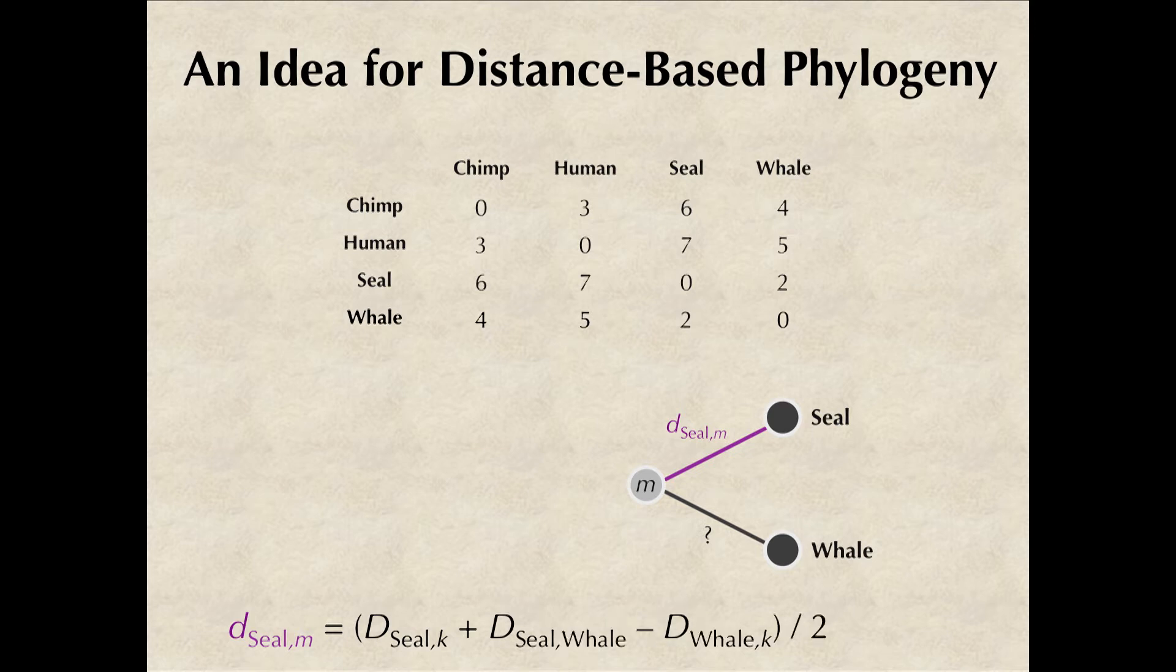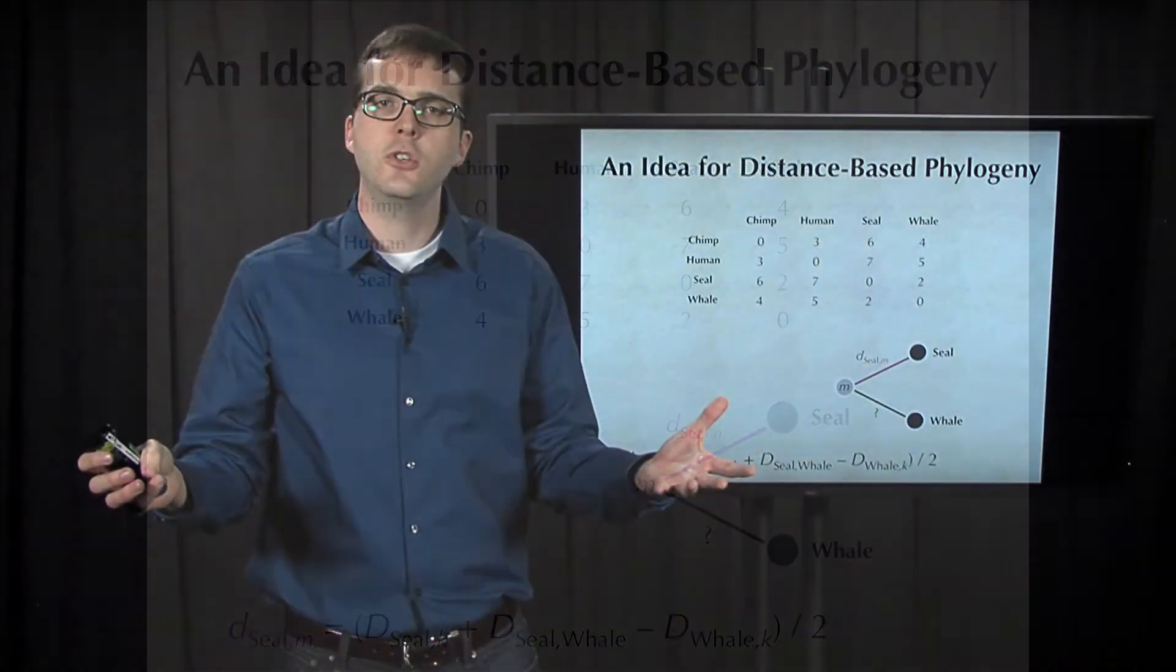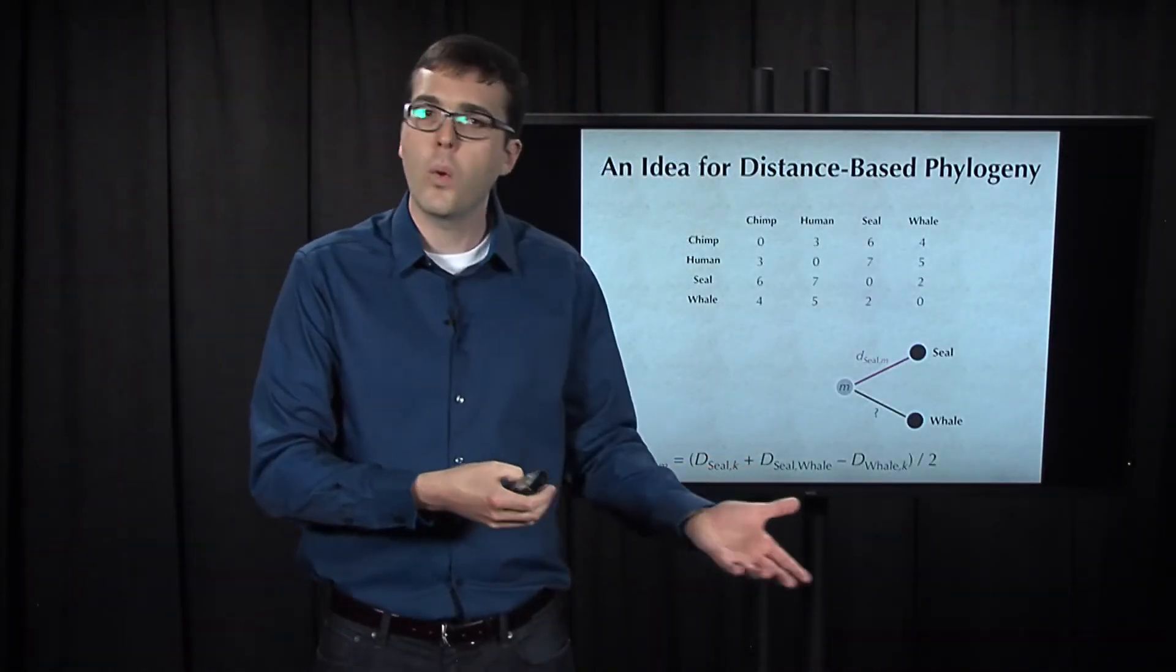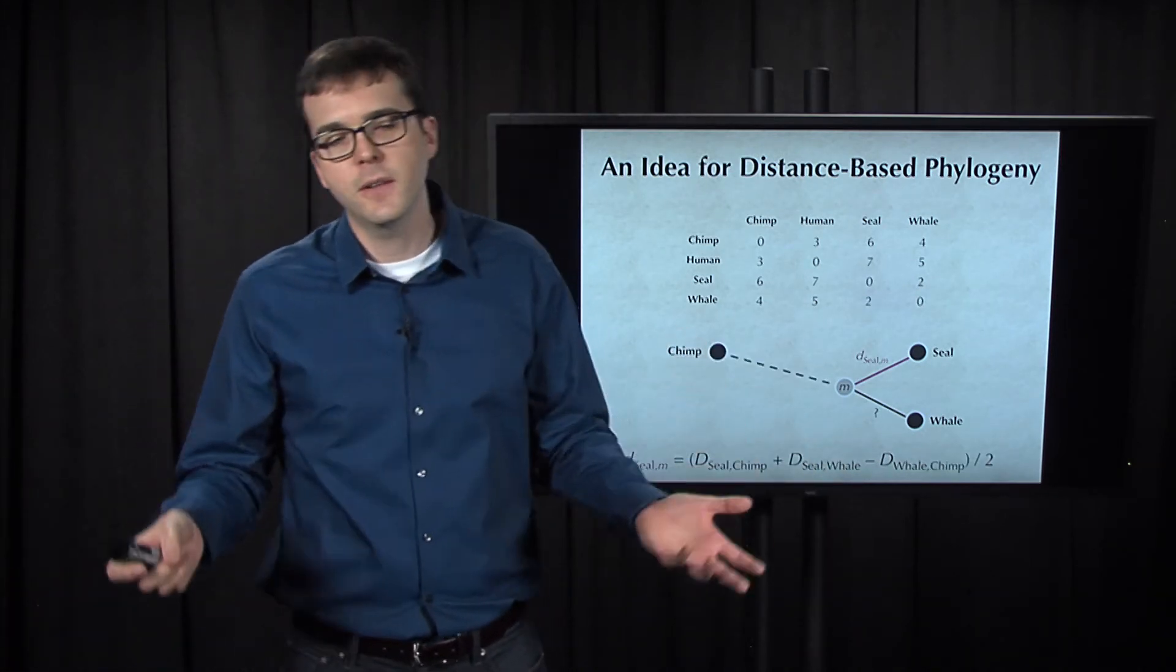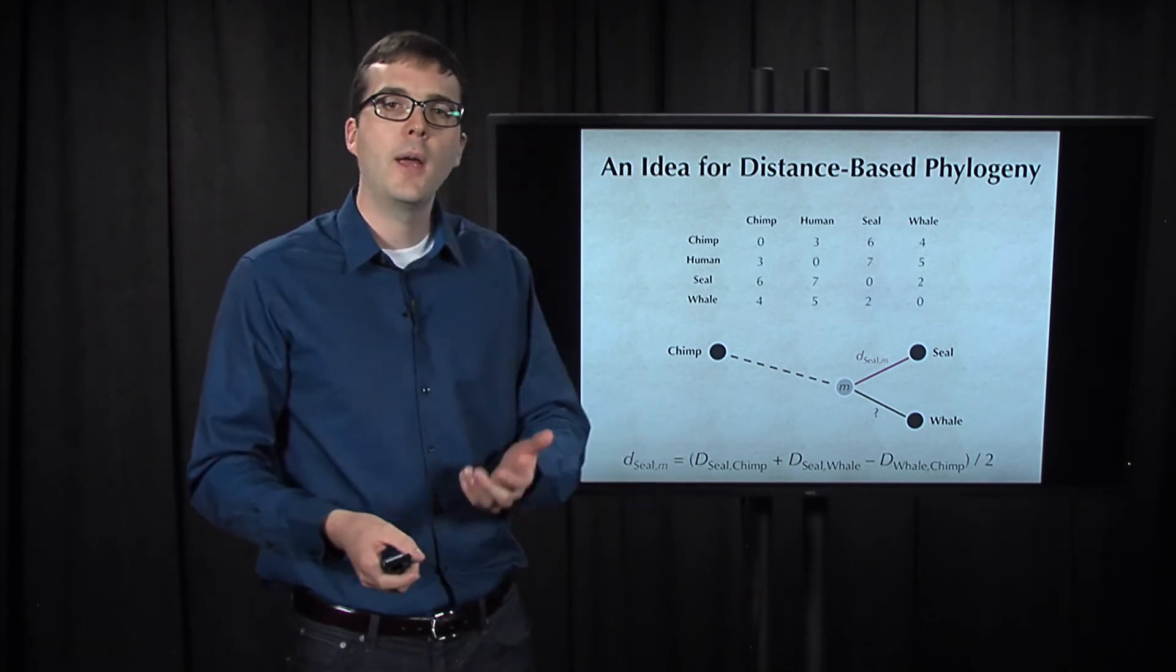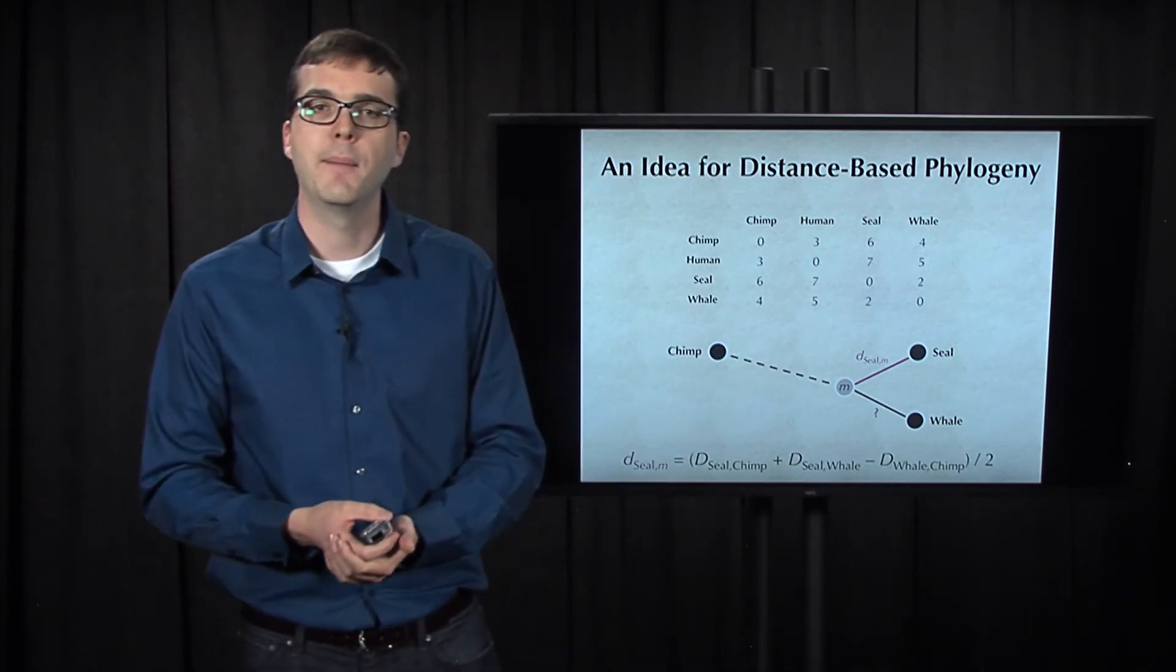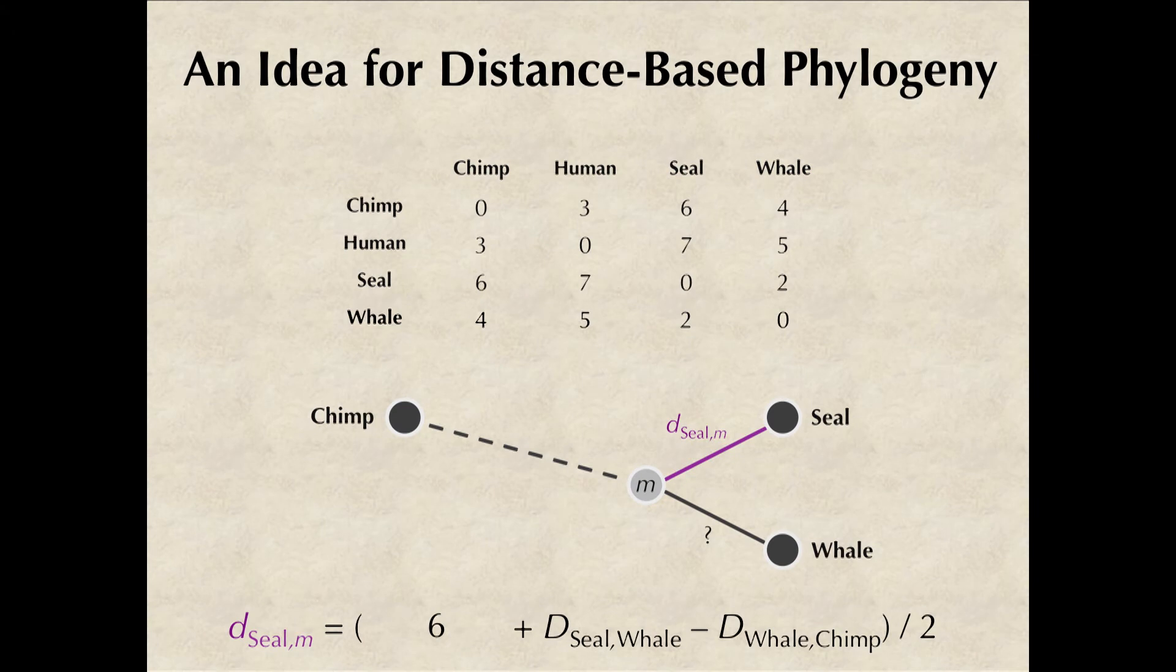Now what about k? You'll remember that I said k could be any other leaf in the tree that we choose. So we could choose chimp or we could choose human. Let's choose chimp. We don't know where chimp is in the tree yet, which is why I'm showing the dashed line here connecting it to m.